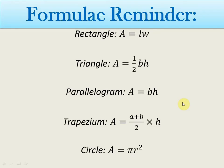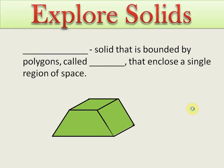This is the formula reminder slide. Rectangle area = length × width. Triangle = ½ × base × height. Parallelogram = base × height. Trapezium = (A + B) × H ÷ 2, where A + B is the sum of parallel sides divided by 2, multiplied by H. Circle = πr², where π is 3.14 or 22/7.